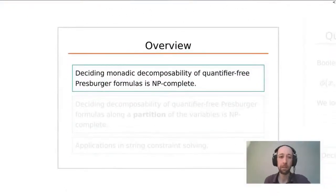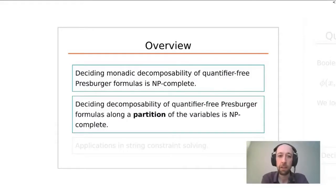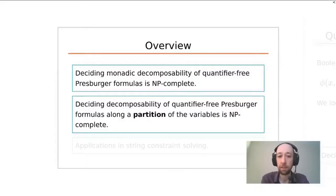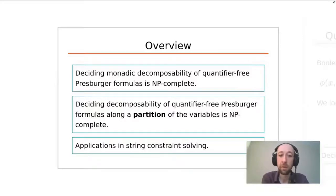Our first main result is that deciding monadic decomposability of quantifier-free Presburger formulas is an NP-complete problem. For our next result, instead of just talking about monadic decomposability, we allow as input a partition of the variables, and we ask whether we can decompose the formula along that partition — this more general problem is also NP-complete. Finally, we talk about applications in string constraint solving with survey data.